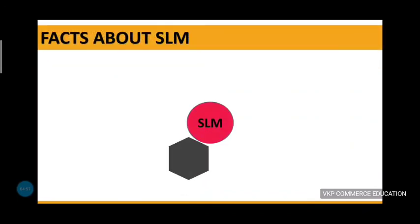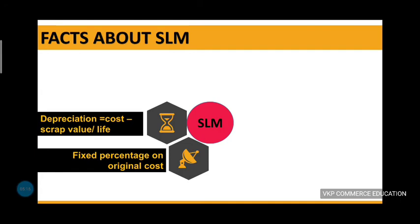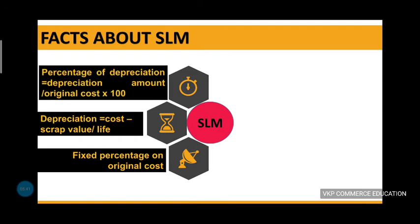The depreciation charge for each year is shown in a graphical representation as a straight line. The formula is: cost minus scrap value divided by life. The rate of depreciation is calculated as the depreciation amount divided by original cost, multiplied by 100.